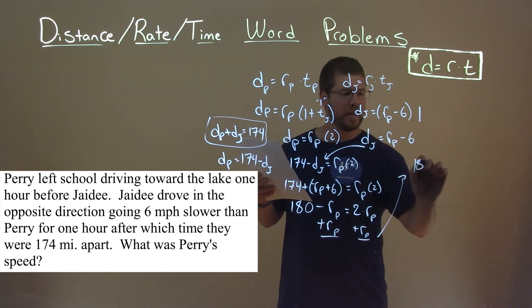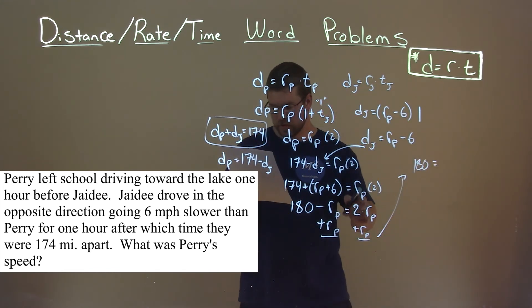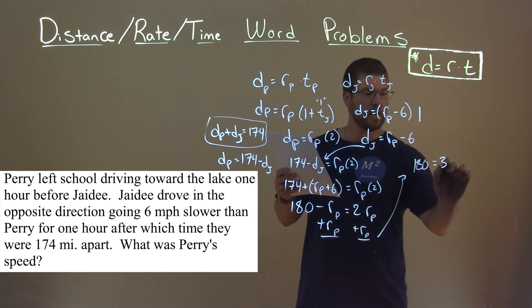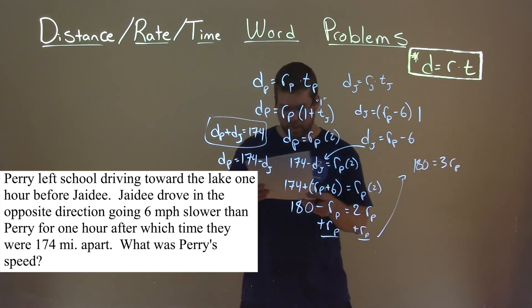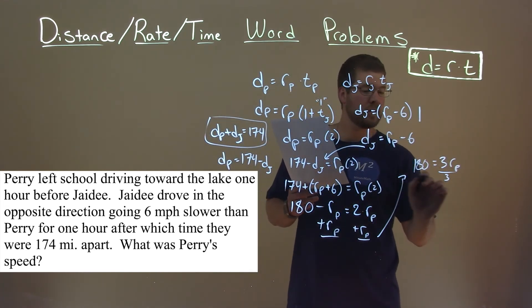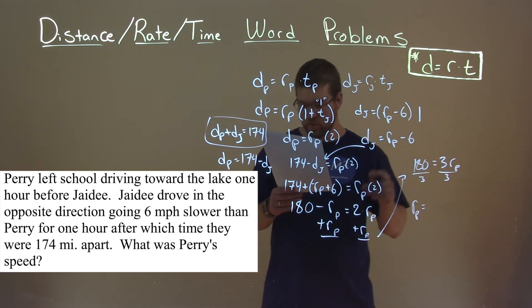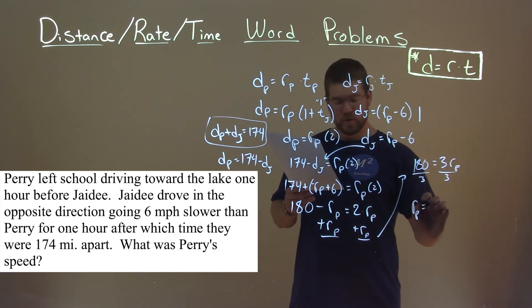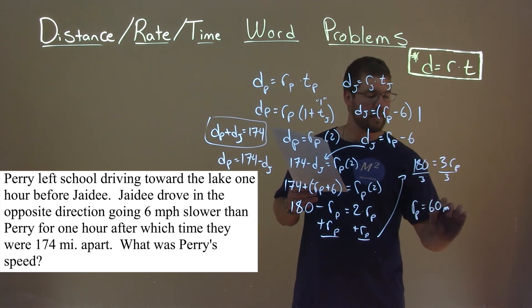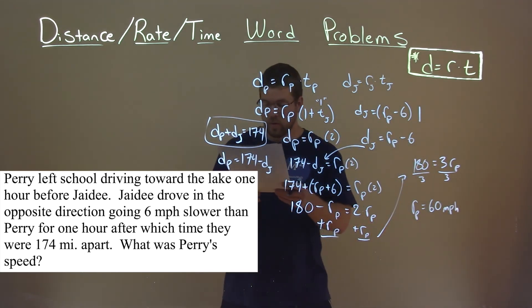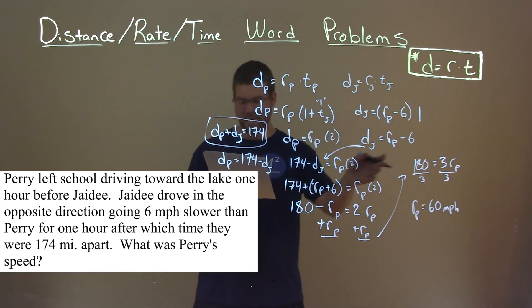We have 180 is equal to, well, 2 plus 1 is 3, so 3 of R sub P. And now we want to divide 3 to both sides to get R sub P by itself. So R sub P is equal to 180 divided by 3, which is 60 units, miles per hour. And so Perry's speed at that time, after all that, was 60 miles per hour.